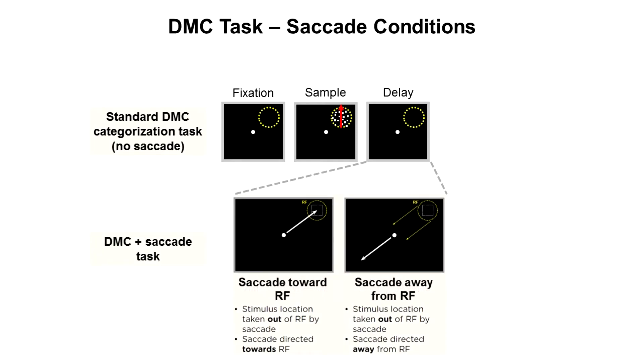To determine the influence of spatial signals on category information in LIP, during some trials, the monkey was cued to make a saccade either toward or away from the receptive field of the neuron understudy. The saccade was cued by relocating the fixation spot, requiring the monkey to make a saccade to reacquire fixation at the new location. The monkey maintained his gaze at the new fixation location for the remainder of the trial.